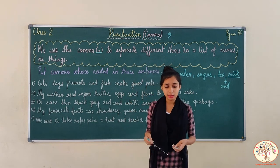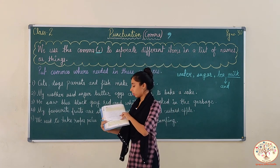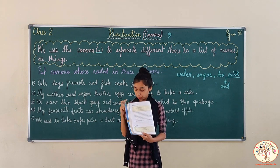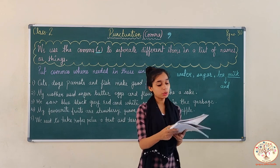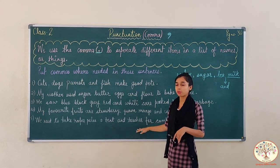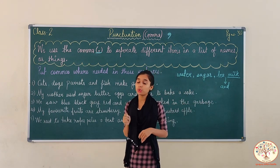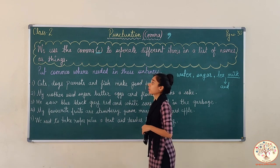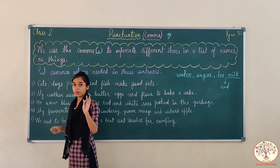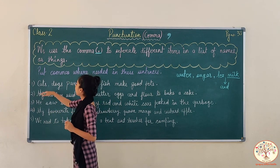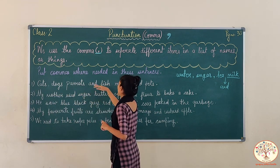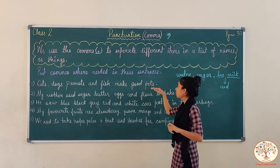Let us see how much we have learned with an exercise. Here it is in our book, page number 30. Exercise number A — put commas where needed in these sentences. जहां भी हमें जरूरत है commas की, वहां पे हम उसमें comma put करेंगे. Shall we start? Let's move. Cats, dogs, parrots and fish make good pets.